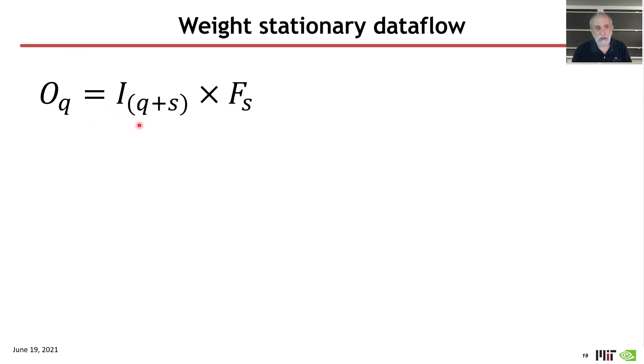And if we look at the index variables that are being used, we see that Q appears both in the input and the output. So it is an uncontracted dimension, but S appears in this equation for the current index of I that we're going to work on, and the current value in the filter weights. And so it's going to be a contracted dimension, and in aggregate, what we're going to do here is a one-dimensional convolution of this filter across this input.